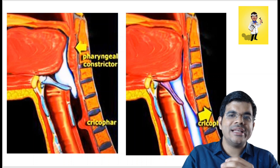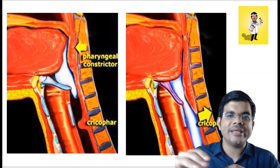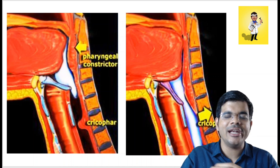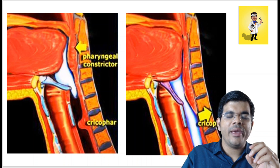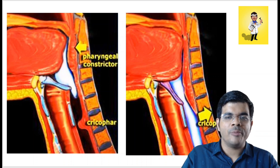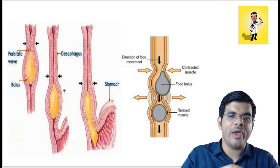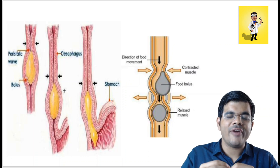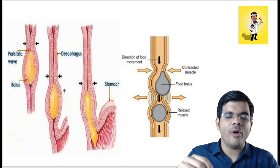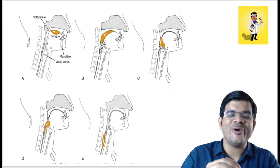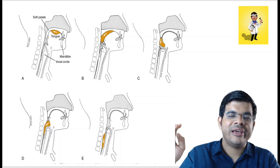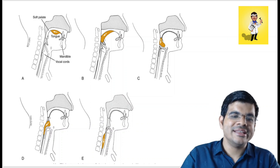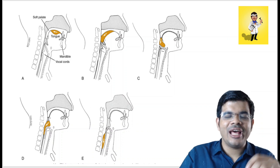Once the cricopharyngeal sphincter relaxes, the food bolus enters the esophagus and the esophageal stage begins. Primary peristalsis occurs — a continuation of the peristalsis from the pharynx — with contraction in front and relaxation behind, propelling the wave forward. If the bolus is not fully propelled by the primary peristaltic wave, distension of the esophagus triggers a secondary peristaltic wave. The esophageal phase continues until the bolus reaches the stomach, taking about 8 to 10 seconds, whereas the pharyngeal stage takes about 1 to 2 seconds and the oral stage about 1 to 1.5 seconds — making the esophageal stage the longest.